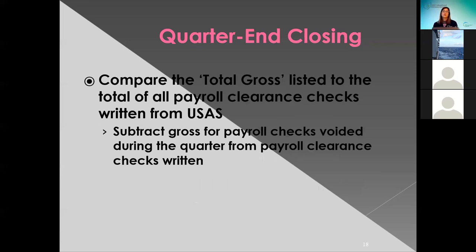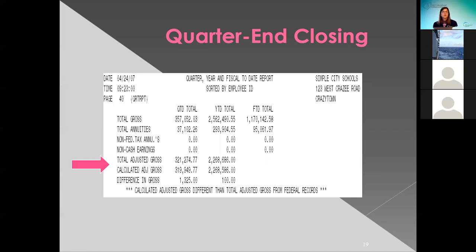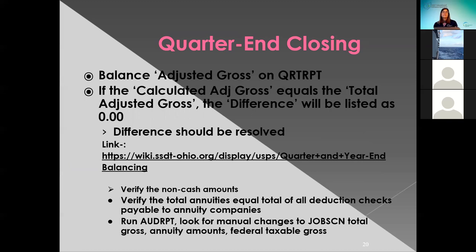Also for quarter end closing, you want to compare the total gross listed to the total of the payroll clearance checks that were written from USAS. Subtract the gross for the payroll checks that were voided during the quarter from any payroll clearance checks that were written. Here's a screenshot of the total adjusted gross and the calculated adjusted gross where you would find that. So you want to balance the adjusted gross on that quarter report — if the calculated adjusted gross equals the total adjusted gross, it will list as zero and you're balanced. If there is any difference and you don't balance to zero, those should be resolved.